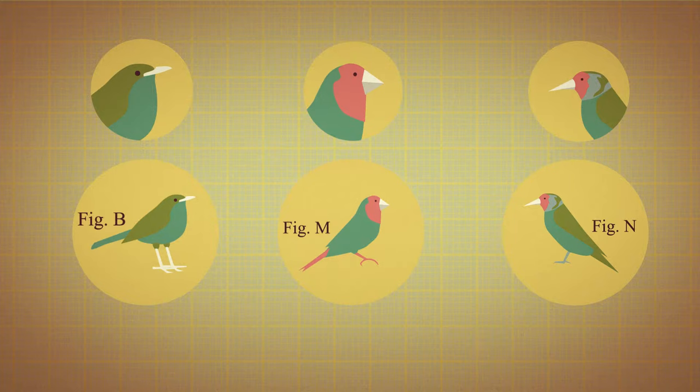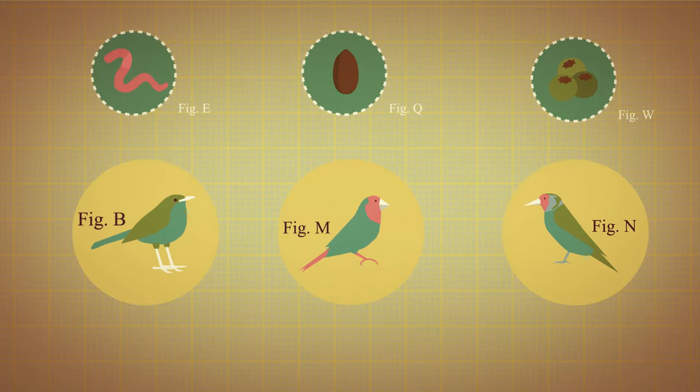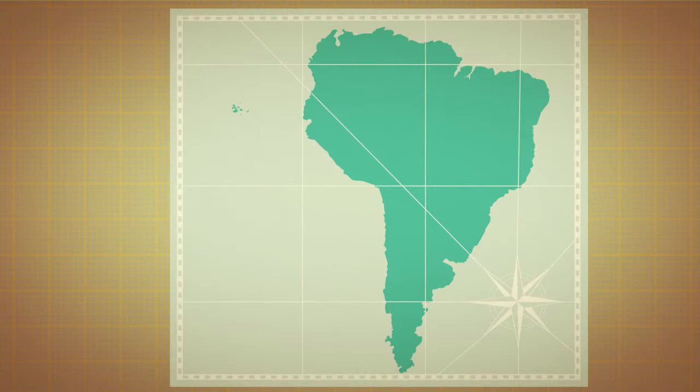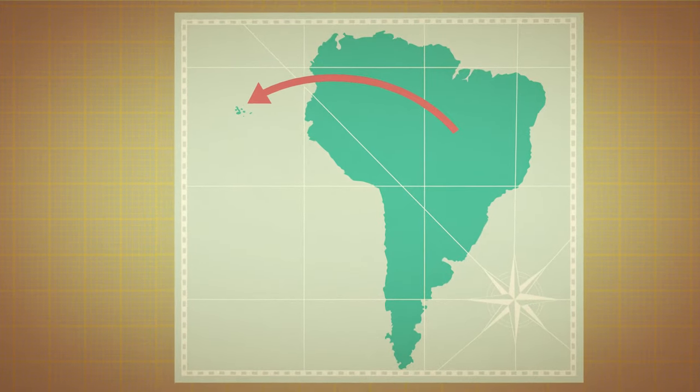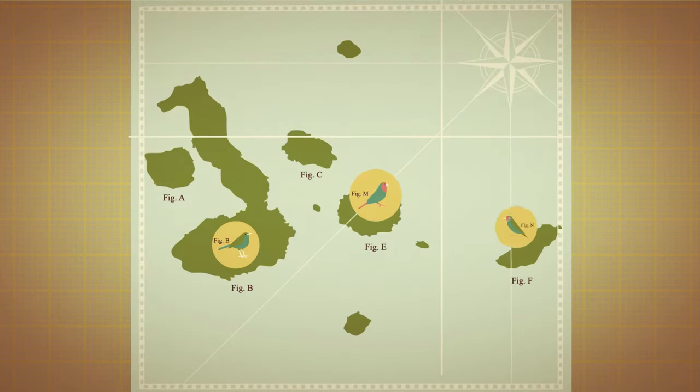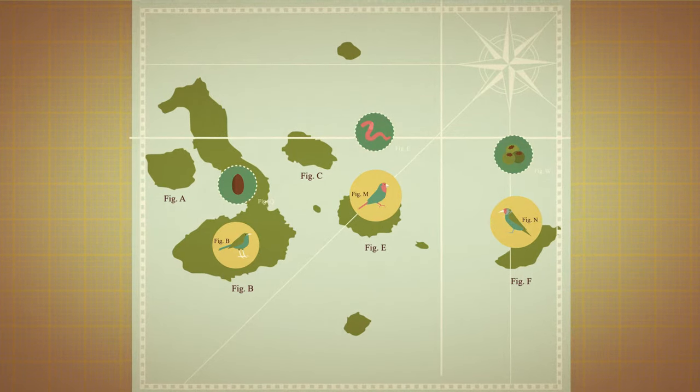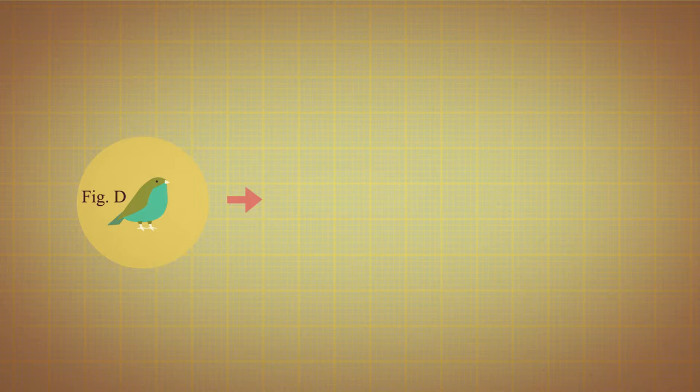Darwin deduced that when the original finches from South America came to the Galapagos, they migrated to different islands and had to adapt to different conditions in order to get food and survive. These adaptations were passed from one generation to the next.